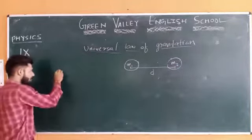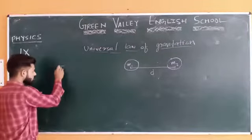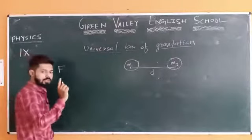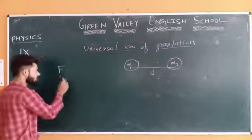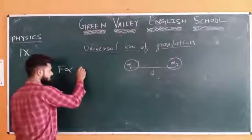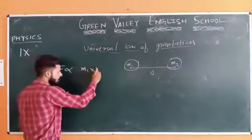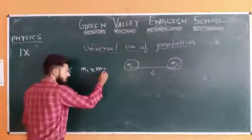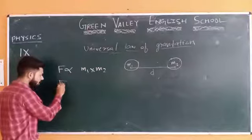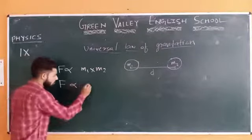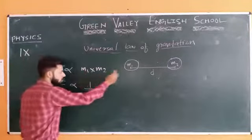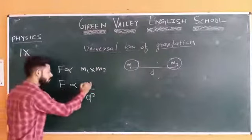So the gravitational force — the attractive force — F is directly proportional to the product of their masses M1 and M2. And the second relationship: the gravitational force F is inversely proportional to the square of the distance between them. So F is directly proportional to the product of their masses, and F is inversely proportional to the square of distance between them.